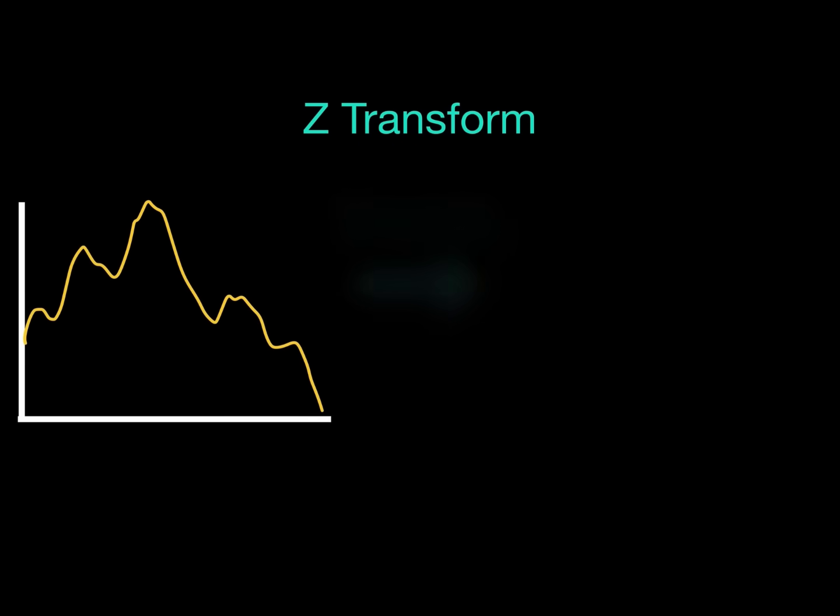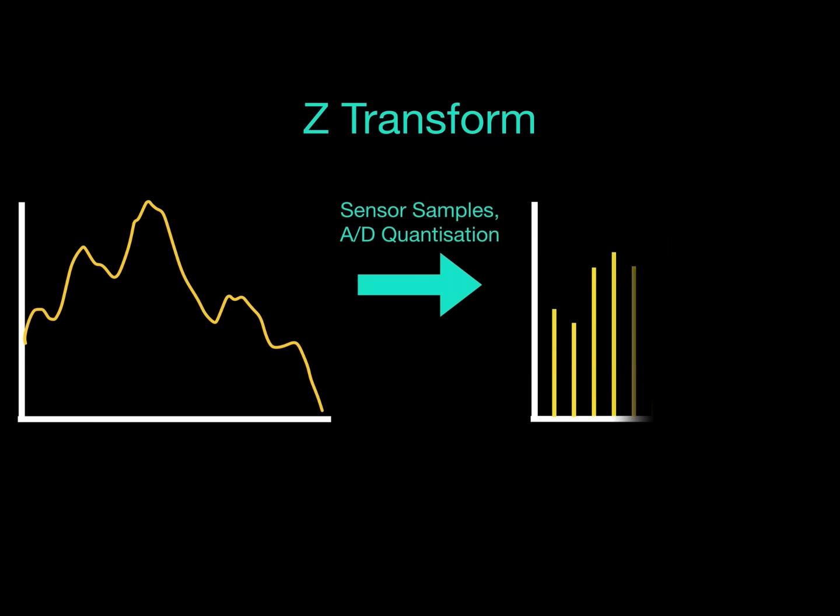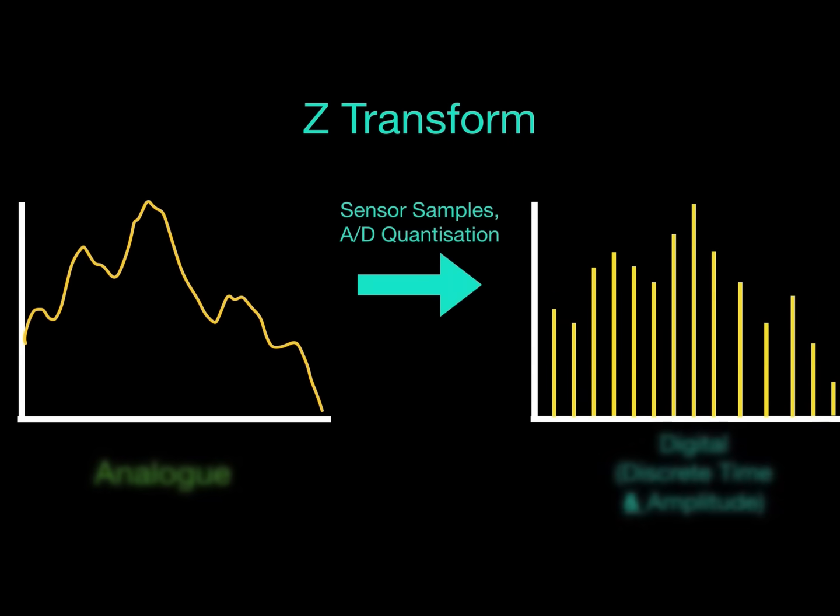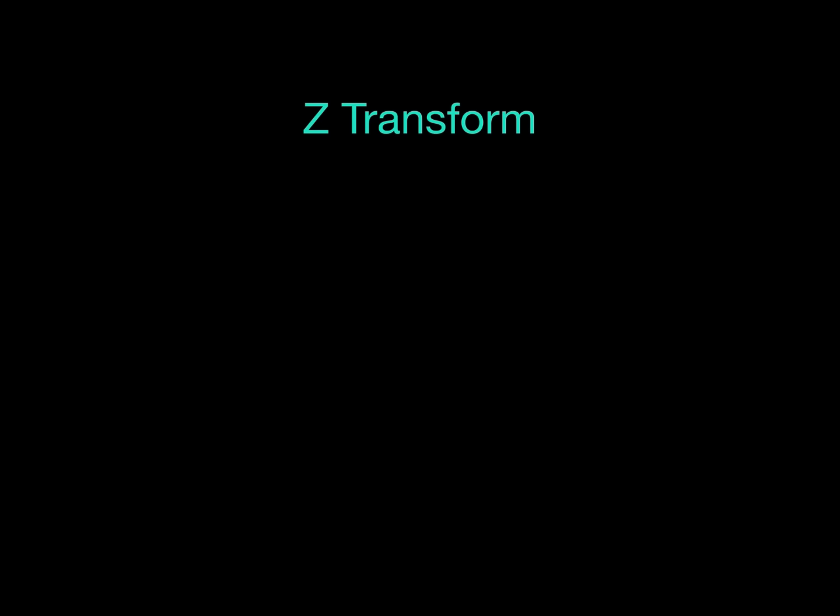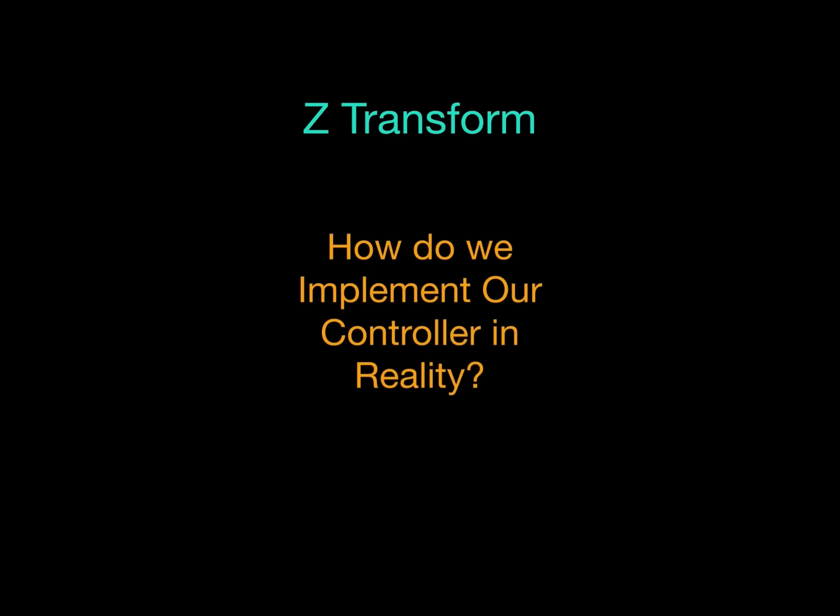The Z-transform is used to convert our thinking towards a digital version of the system. Although there is a lot of theory for the Z-transform, the most directly useful application is based on our system, either in the Laplace domain or frequency domain. Why would we want a discrete version of our system? The answer is that in engineering, most of the time we may have a sensor connected to a microcontroller. Sensors take samples, but the act of sampling is not continuous. It is discrete, so the question is, how do we implement our continuous controller in reality?